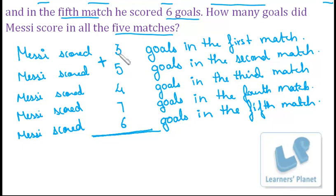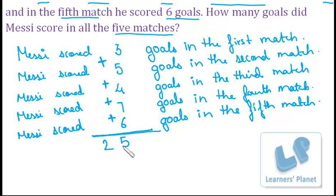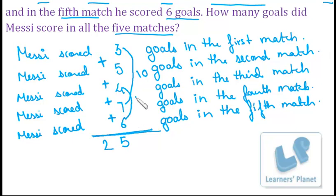First we'll add three plus five, which is eight. Eight plus four is twelve. Twelve plus seven is nineteen. And nineteen plus six is twenty-five. If you're unable to add directly like that, you can pair numbers: three plus seven makes ten, and four plus six also makes ten. So we have twenty plus five, which gives us twenty-five as the answer. When you have many single-digit numbers to add, you can pair them up to form ten and then add the remaining numbers.